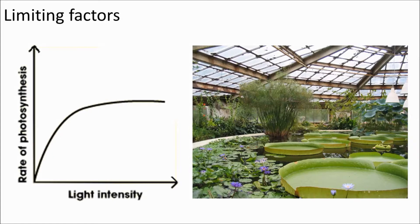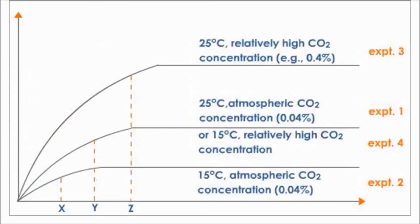Greenhouses are designed to give plenty of light and warmth to a plant, but some plant producers will also pump CO2 into their greenhouses to ensure really rapid growth. In this graph here, you can see that with relatively high levels of carbon dioxide and high temperatures, the rate of photosynthesis is highest.